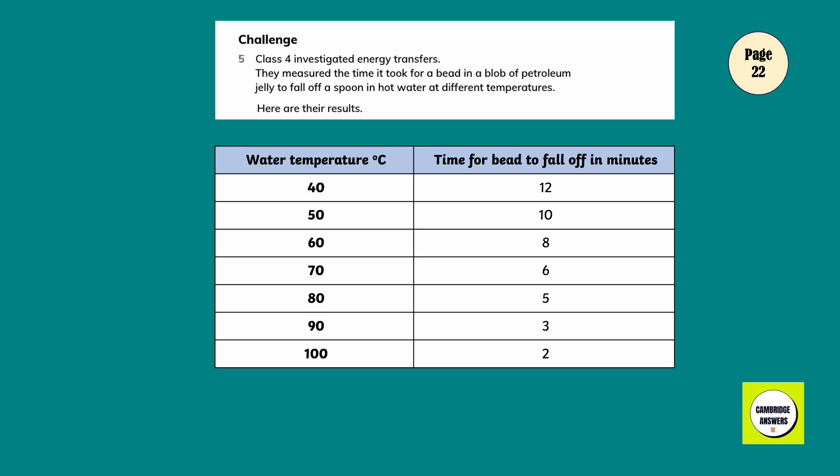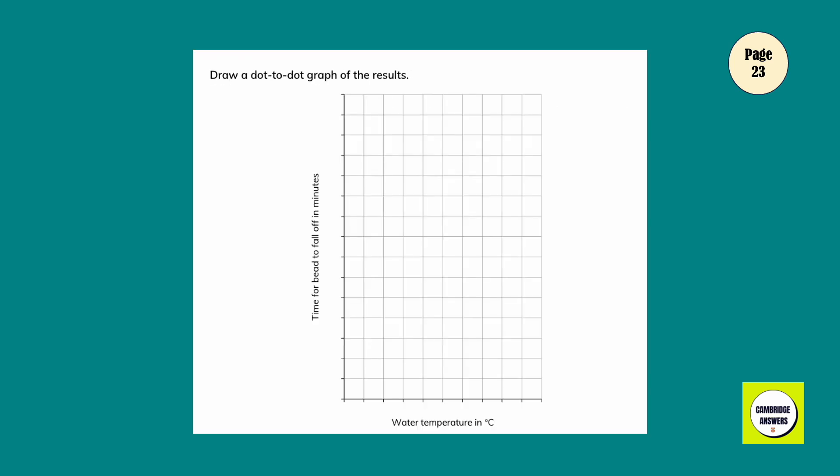Class 4 investigated energy transfers. They measured the time it took for a bead in a blob of petroleum jelly to fall off a spoon in hot water at different temperatures. Here are the results. Water temperature in degrees Celsius, time for the bead to fall off in minutes: 40 degrees Celsius, 12 minutes; 50, 10; 60, 8; 70, 6; 80, 5; 90, 3; 100, 2. Draw a dot-to-dot graph of the results.